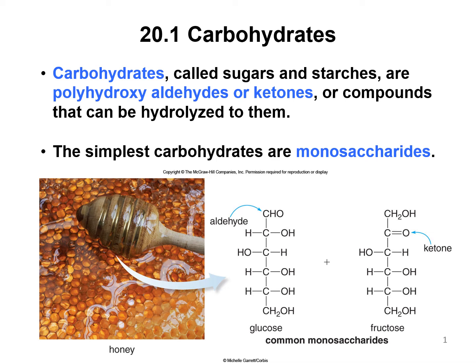Now we're going to introduce carbohydrates. There are two subclasses. Carbohydrates encompasses many of these compounds. Sugars are polyhydroxyaldehydes or ketones, and starches are compounds that are multiples of these subunits linked together and can be hydrolyzed to produce them.